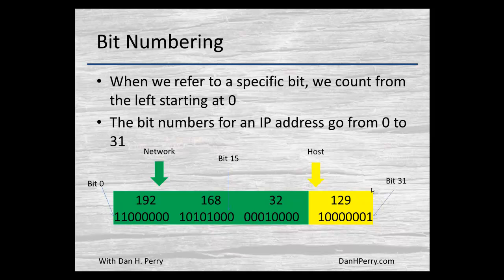The rightmost bit is bit 31. For example, bit 15 is the last bit of the second octet. It's the 16th bit, or if we count from 1, it's 16 bits over. Since we count from 0, it would be bit 15.